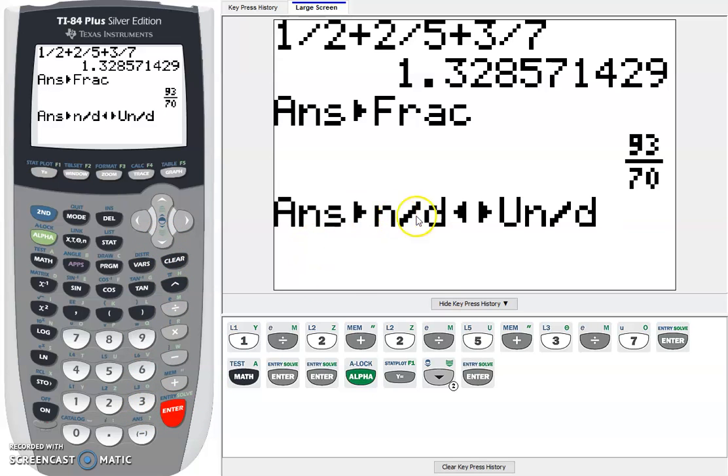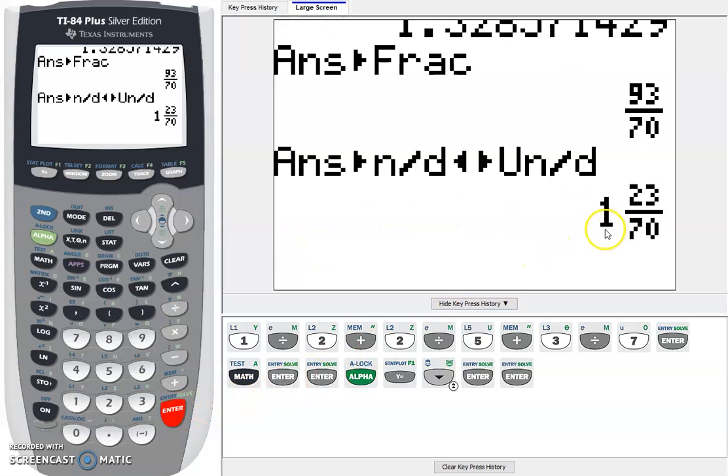This will be a command to turn it into a mixed fraction. So now we have 1 and 23 70ths as our mixed fraction.